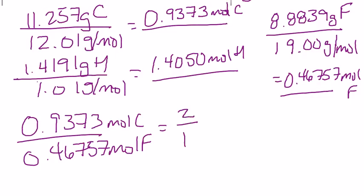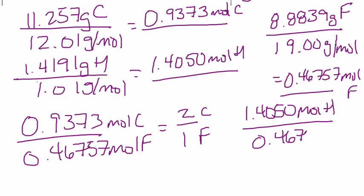two moles of carbon to one mole of fluorine. And the 1.4050 moles of hydrogen over the 0.46757 moles of fluorine is approximately equal to three to one of hydrogen over fluorine.